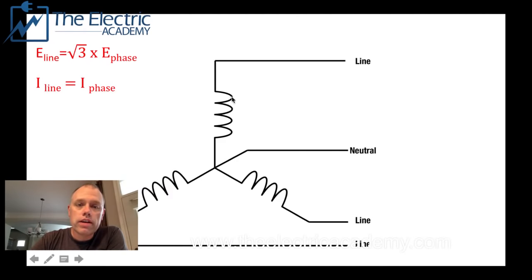Now our current, again, just to say this, 120 vectorally with 120 gives us 208. Our current, however, is going to be in series with this, and current in series doesn't change. So our I line equals our I phase. Now this adds to, let's talk about some advantages.